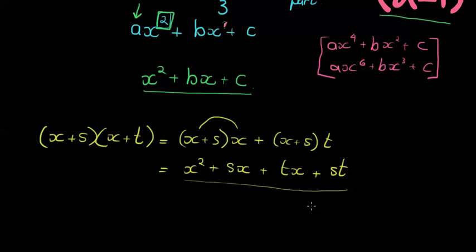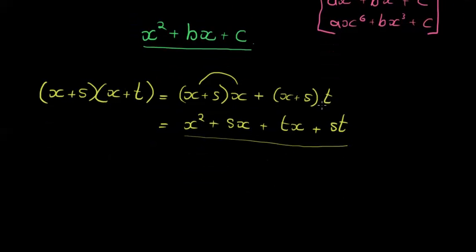Now you can see if I multiply a binomial with a binomial, I actually get in this case I get four terms. But notice here that if s and t were to be numbers, if this was something like 2 and t was something like 3 or whatever, if s and t were numbers then this would have been 2x and 3x so I would be able to add them together.